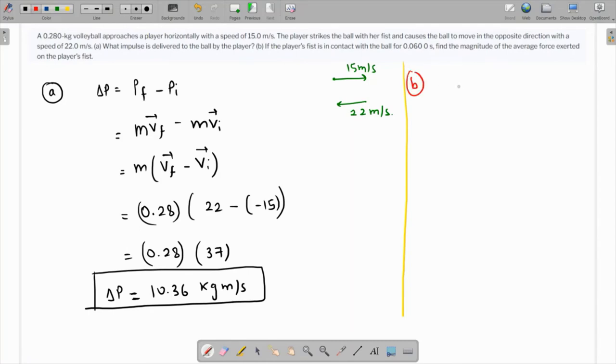We have a formula that F times delta t equals the impulse, so the force is going to be the impulse over the change in time. The impulse is 10.36 and the contact time is 0.06.